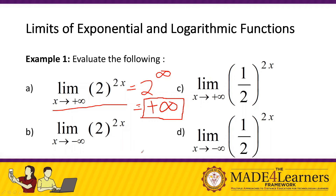For B, we substitute negative infinity: 2 to the power of 2 times negative infinity. Our base 2 is greater than 1. We get 2 to the power of negative infinity. When the exponent is negative, it becomes the reciprocal, so we have 1 over 2 to the power of infinity, and this becomes 0.